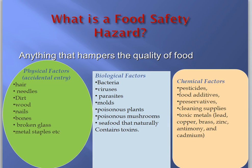Coming to biological factors, examples include bacteria like Salmonella and E. coli, and viruses like norovirus. There could be parasites - in pork, for example, we find tapeworm. There could be mold: if bread has mold growing on it when it reaches the market, that is a biological hazard. Certain poisonous plants, poisonous mushrooms, and seafoods contaminated by naturally occurring toxins are also included under biological hazards.